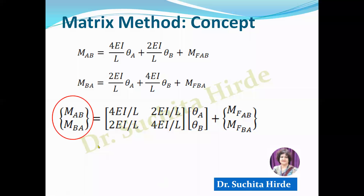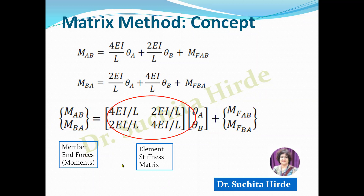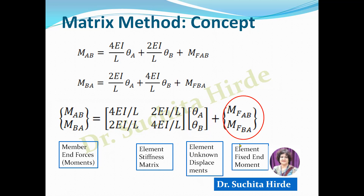In this matrix equation, the left-hand side matrix is called the member end forces — forces also include moments, so these moments are member end forces. The second matrix is called the element stiffness matrix, which is what we are interested in. The third matrix is called the element unknown displacements — these are the unknown displacements we want to calculate. The last matrix is called the element fixed end moments.